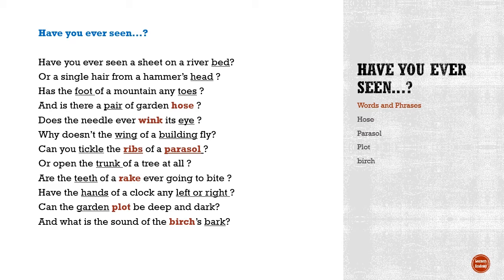Can the garden plot be deep and dark? Plot is basically a piece of land, so garden plot means a piece of land used for gardening. Another meaning of plot is an evil or wicked plan that is deep and dark. So the poet is asking can the garden plot be deep and dark.